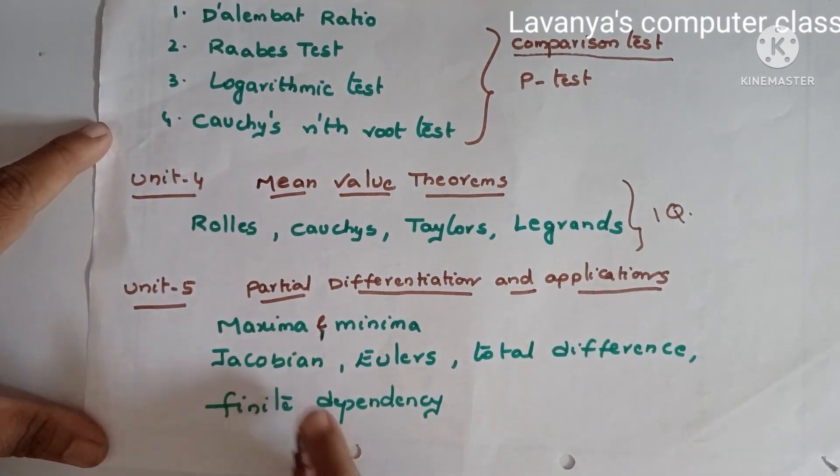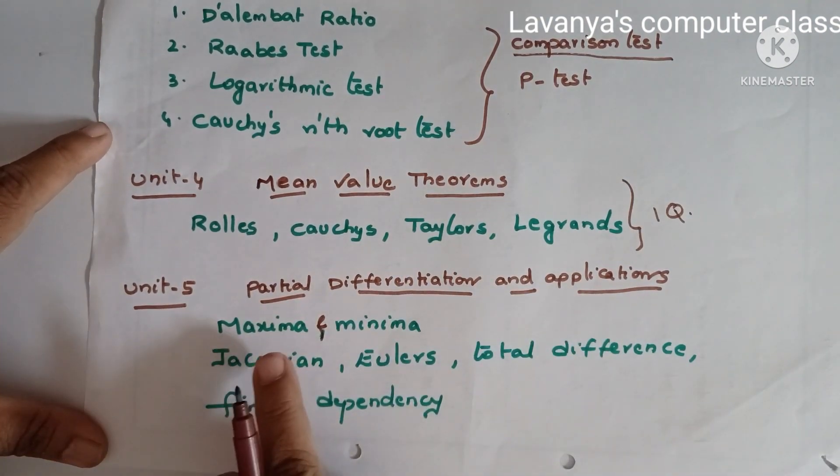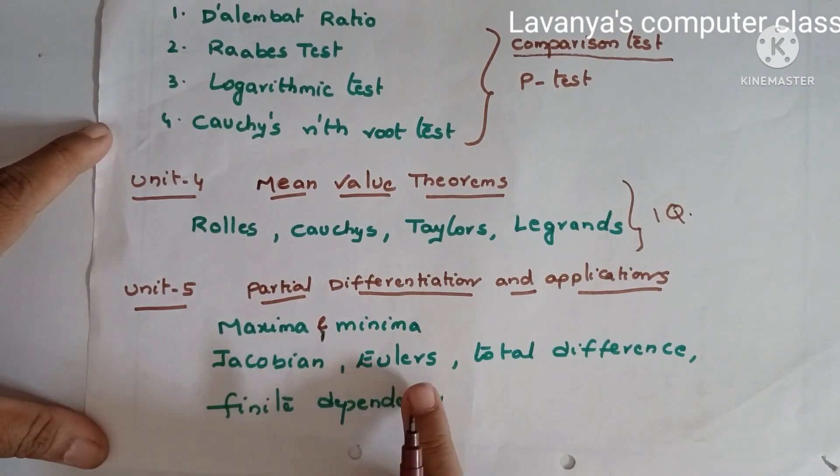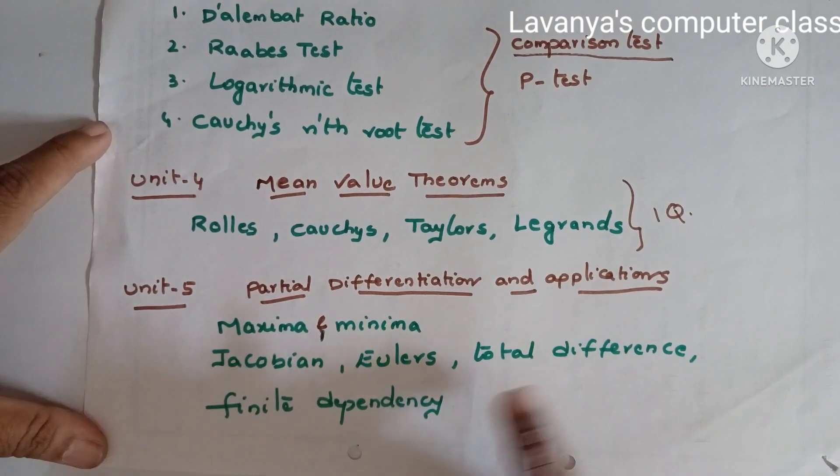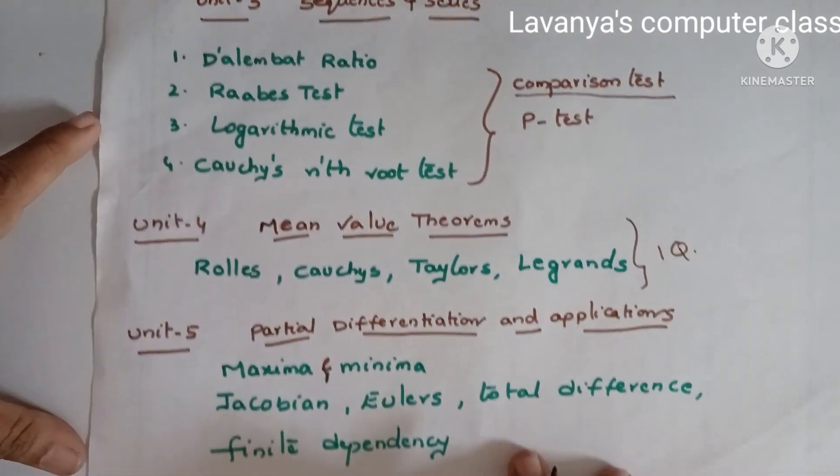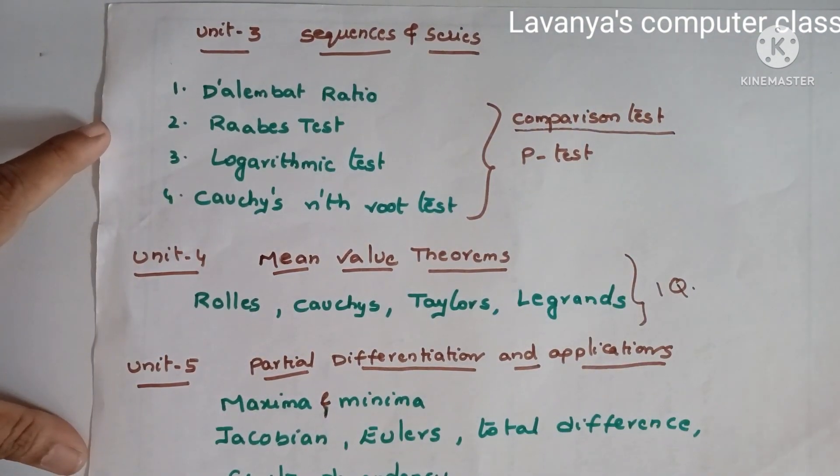Next, unit five, that is partial differentiation and applications. In this learn maxima and minima, Jacobian, Euler's, total difference, and finite dependency. In these also compulsory one question is coming. If you read these, you can easily get good marks in M1.